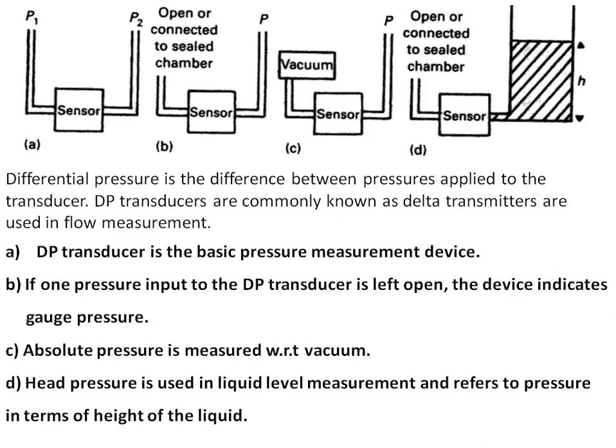In figure B, if one pressure input to the DP transducer is left open, the device indicates gauge pressure, generally with reference to atmospheric pressure. Figure C represents absolute pressure, which is measured with respect to vacuum — ideally zero pressure.